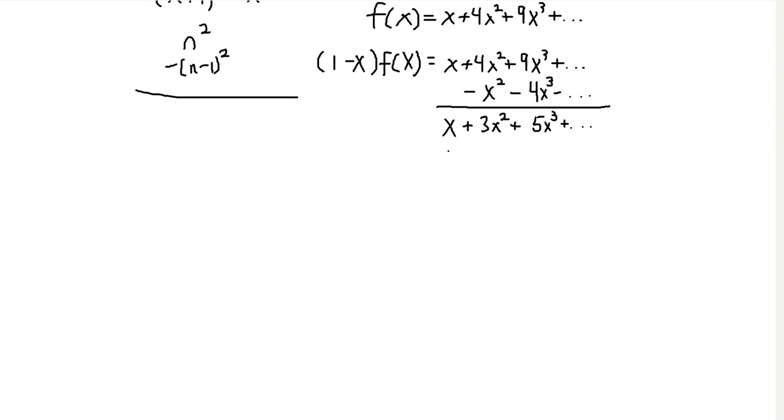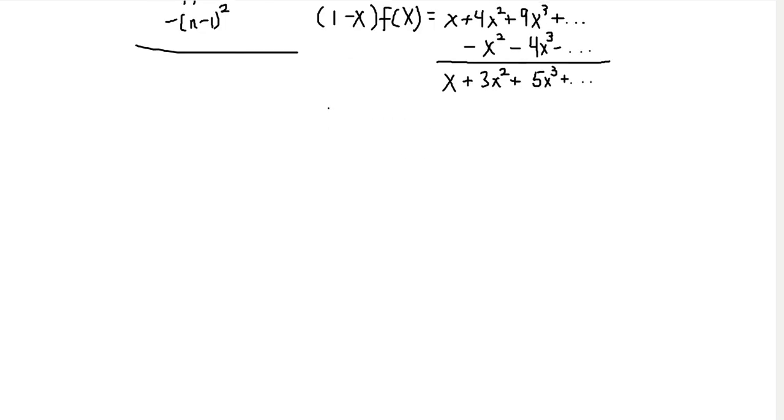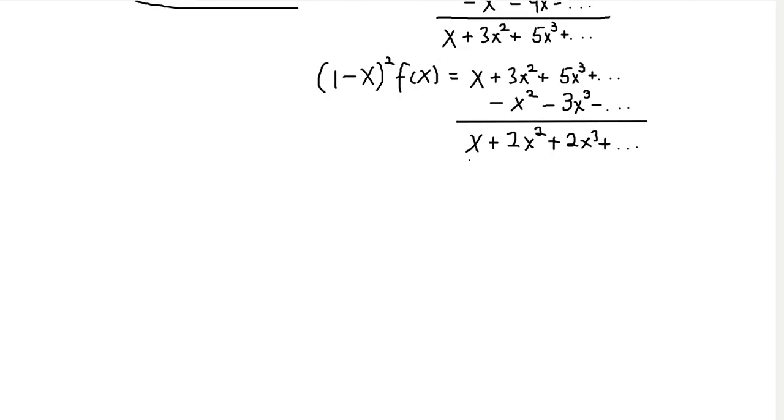And so we can multiply by 1 minus x again. So, so now what we get is this polynomial, or so we shift the terms again, right? So here I have 1 minus x squared, because I multiplied by 1 minus x again. So we have, okay, the odd integers here, and then shifted odd integers here. And so when we do our addition, we get, so now we get x plus 2x squared plus 2x cubed, and so on. And so we notice that if we subtract two consecutive odd integers, we're just going to get two every time, right?